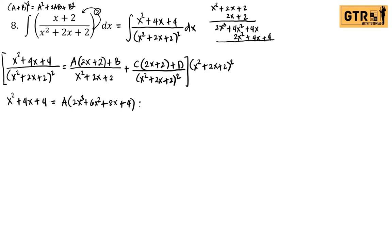For the B part, we can cancel one factor, so we just copy (x² + 2x + 2). For letter C, numerator and denominator cancel, so what remains is (2x + 2). For D, there is no coefficient of D.